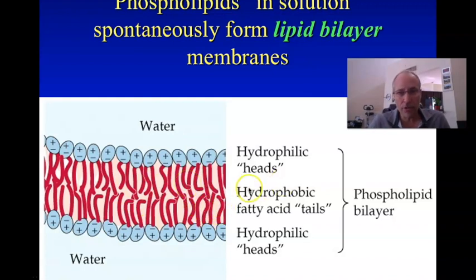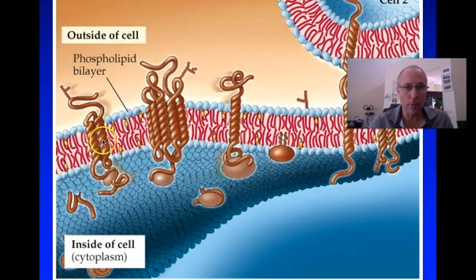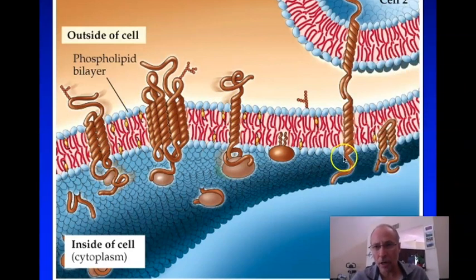Your phospholipid bilayer is set this way. It's very easy to make. But this is not a living membrane. Living membranes are more sophisticated — this is just the basis of a membrane. To make a living membrane, you have to embed inside it a number of different things, like these proteins embedded in this membrane.